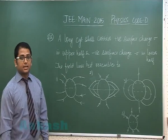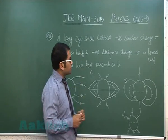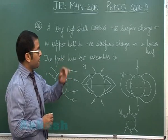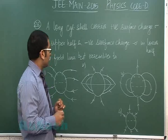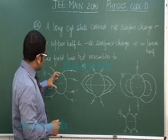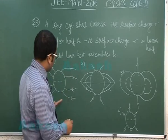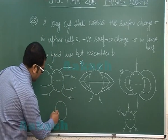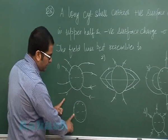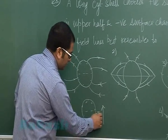Another beautiful question, yet again from electrostatics. It says a long cylindrical shell carries positive surface charge sigma on the upper half and negative minus sigma in the lower half. The field lines best resemble - of course, it's a cylindrical shell and the upper half is positive, lower half is negative. But if you see that positive uniform, negative uniform, the whole thing can be reduced equivalent to a dipole structure.